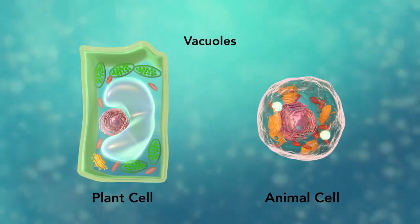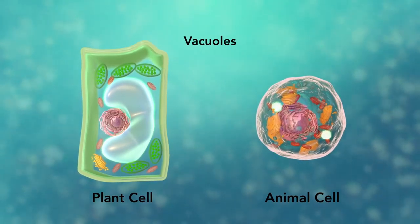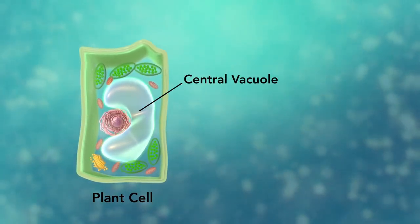Vacuoles are sac-like structures that store different materials. Here, in this plant cell, the central vacuole stores water.